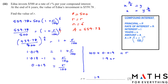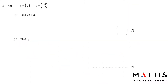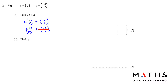Practice a couple of questions like this - it is repeated quite often. Question number 2 is a vector question. We have to find 2p + q. Write p as (4, 5) and q as (-2, 7). Multiply 2 by 4 and 5 to get (8, 10). Then 8 + (-2) = 6 and 10 + 7 = 17, giving the answer (6, 17).